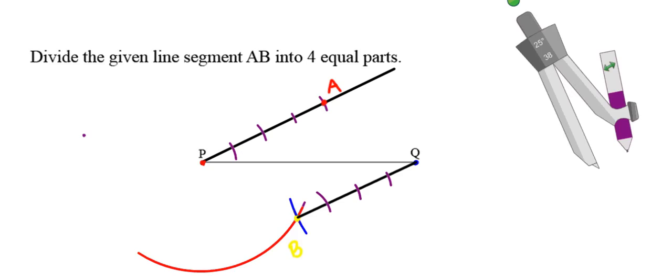And again, this is the part that I get confused on sometimes. Just remember to go end point to end point, first arc to first arc, and so on and so forth as you move down the line segments. As long as you remember to go end point to end point, you'll be in good shape. So now we've successfully divided our line segment PQ into four equal parts.